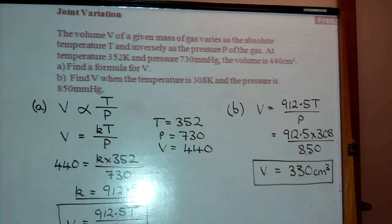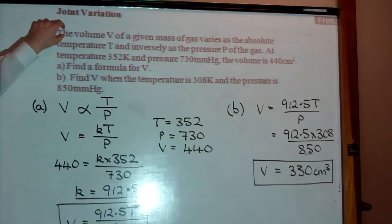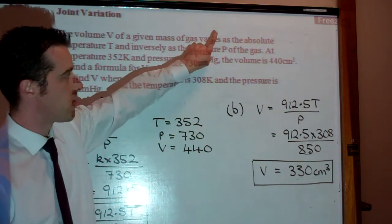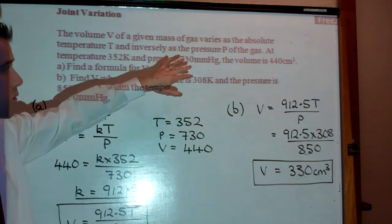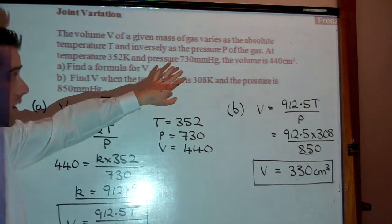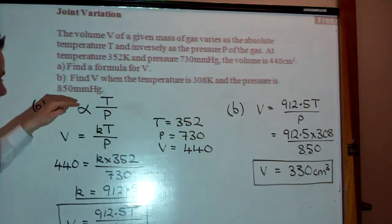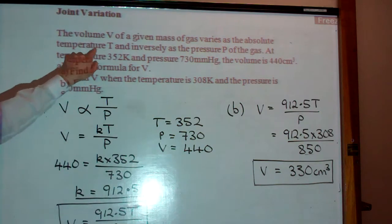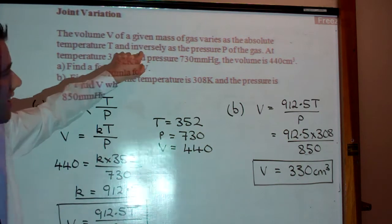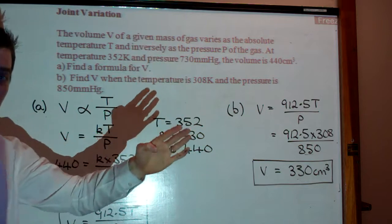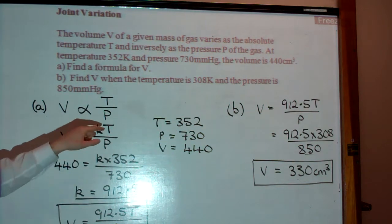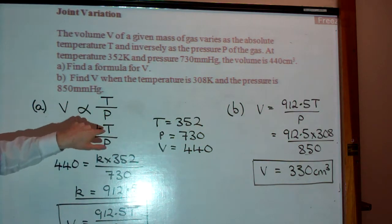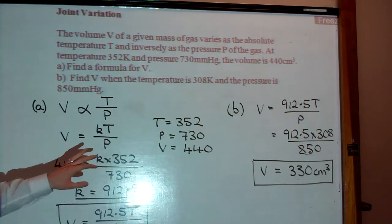Okay, so let's go through one more time. We're given our variation statement, so it says the volume V of a given mass of gas varies, remember varies just means varies directly, you don't necessarily have to say varies directly, just varies is okay, and that means direct variation, as the temperature T, that's why the T is on the top, and inversely as the pressure P. Remember if it's inverse it's 1 over, alright, but in this case we're just going to put the P on the bottom. We looked at that in detail in class, why that happened.